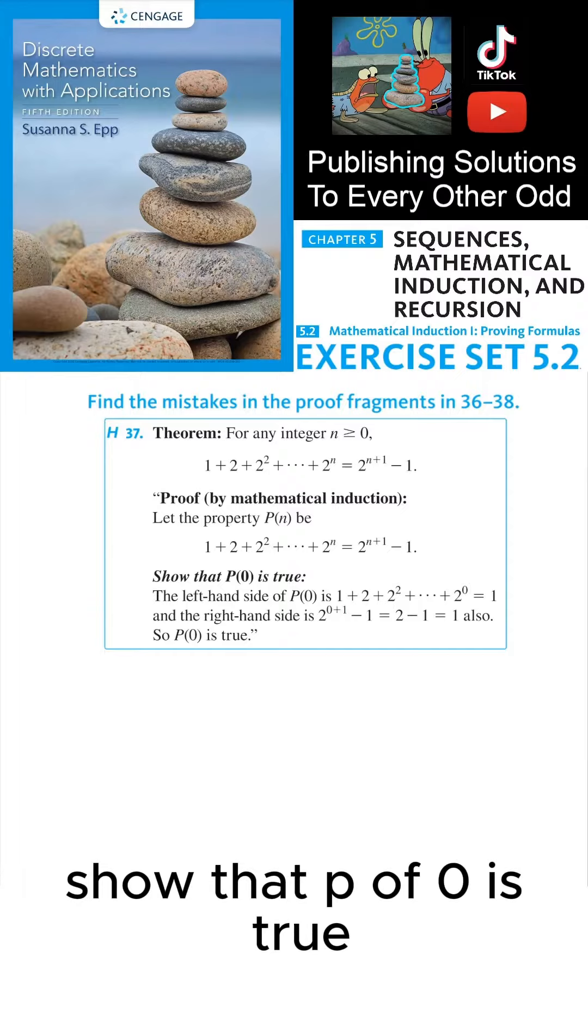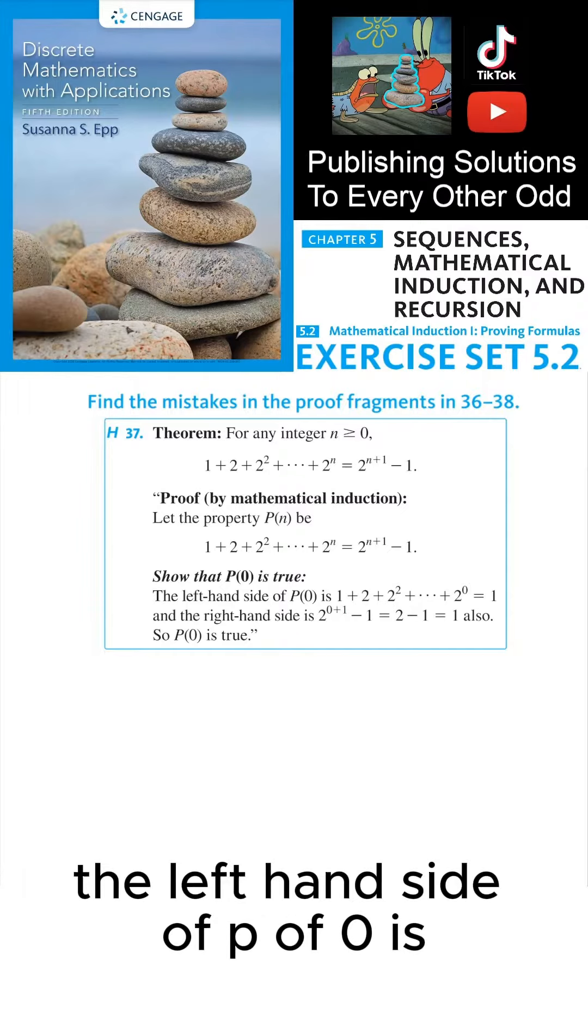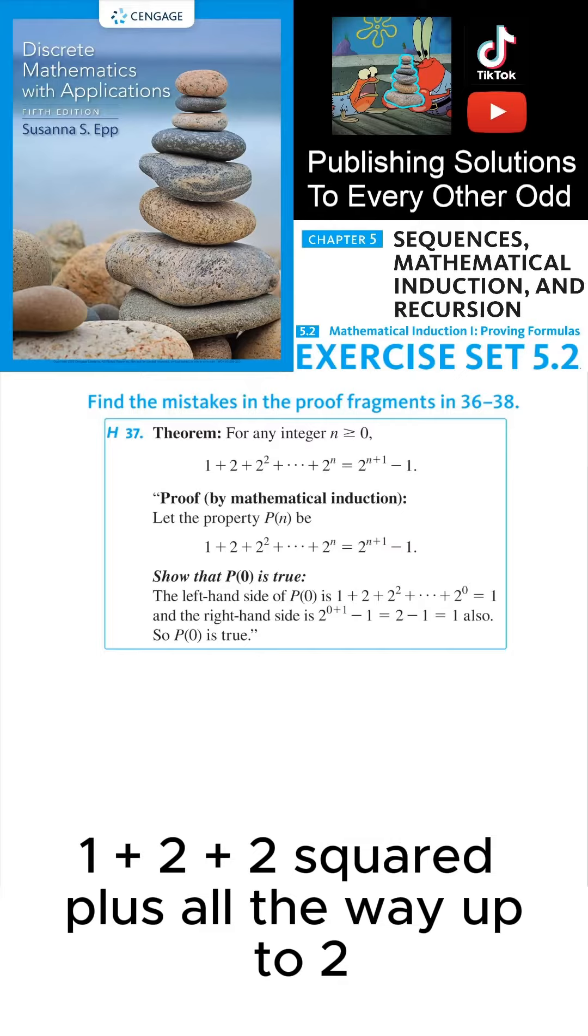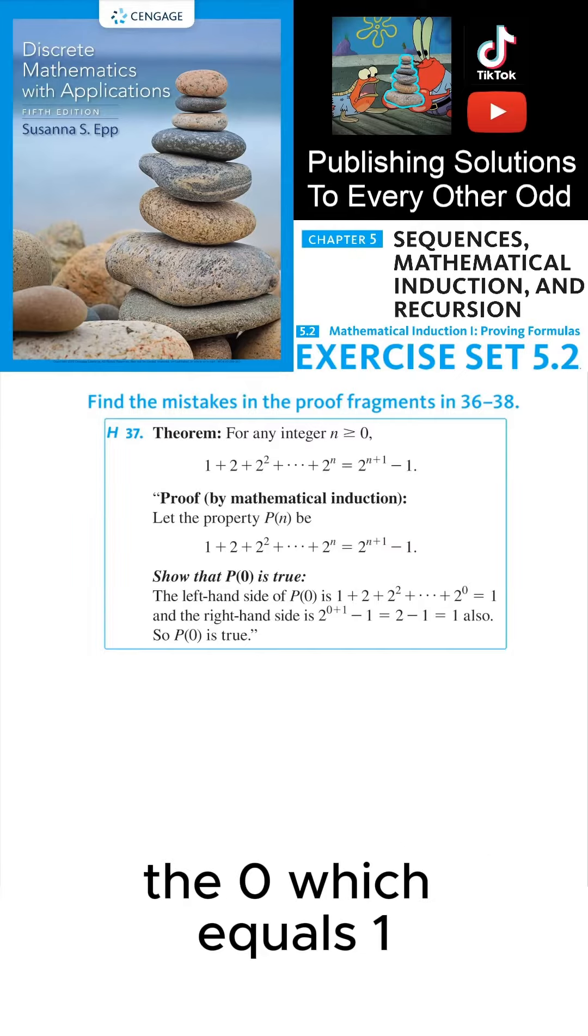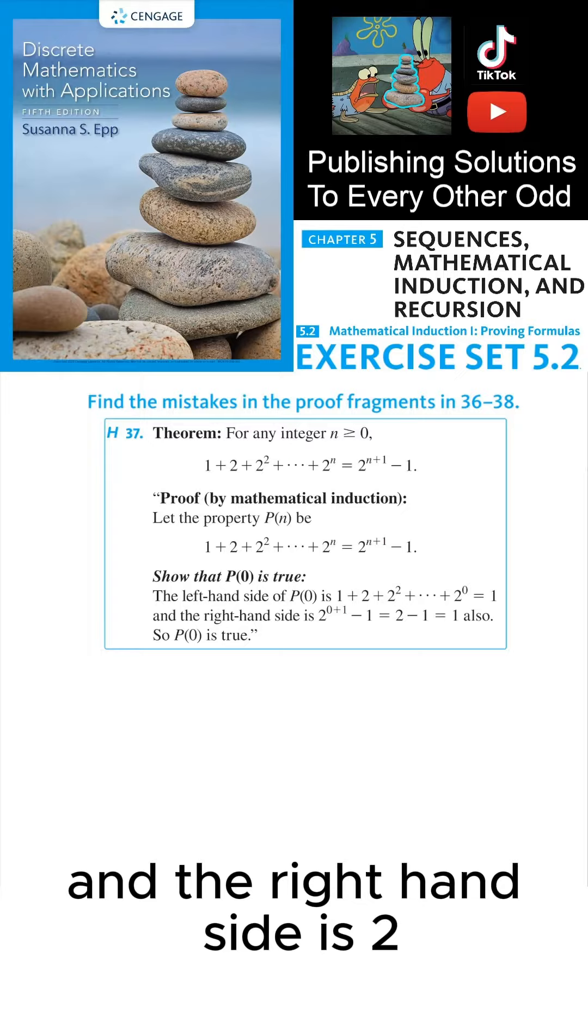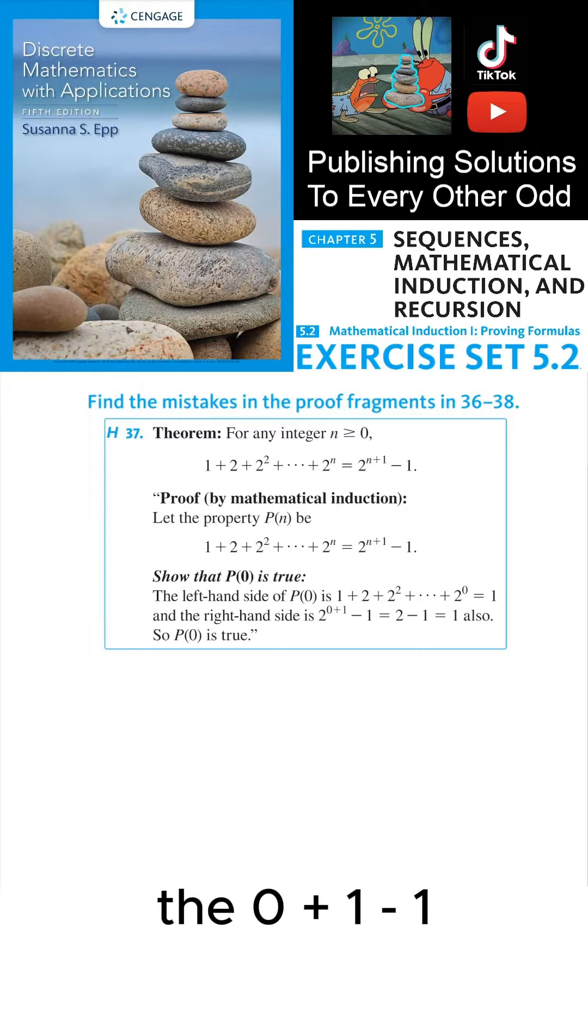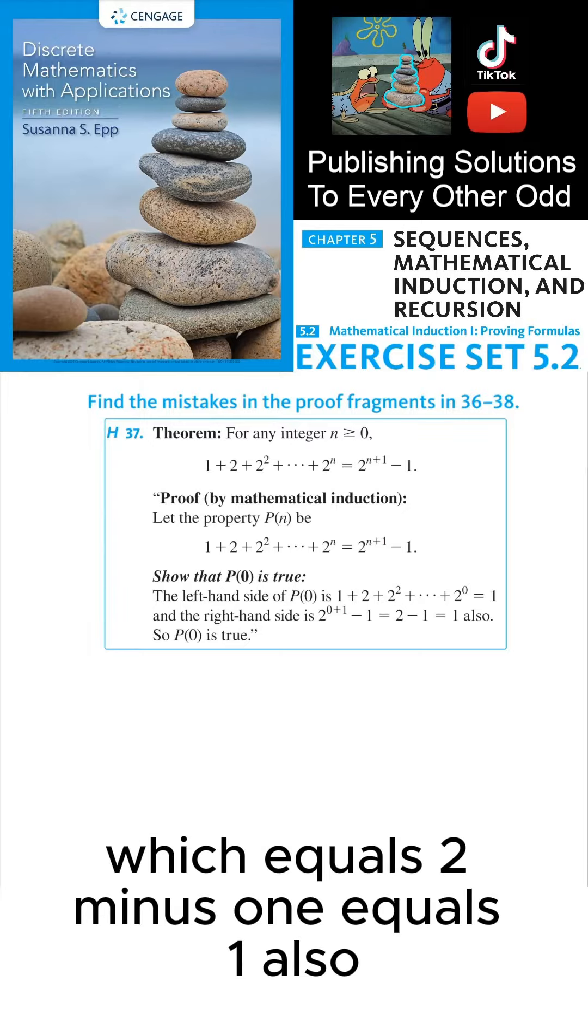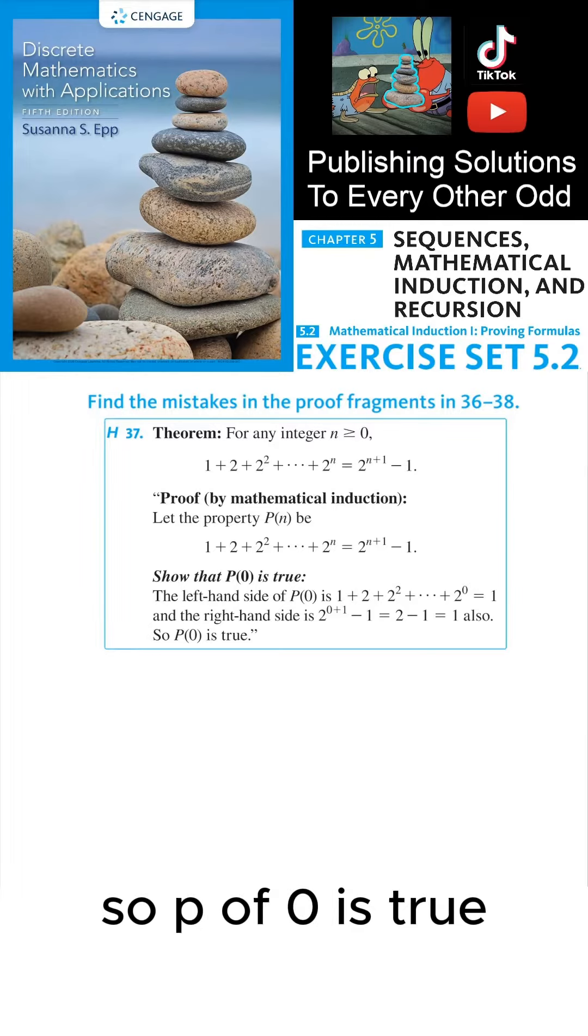Show that P of zero is true. The left-hand side of P(0) is one plus two plus two squared plus all the way up to two to the zero, which equals one. And the right-hand side is two to the zero plus one minus one, which equals two minus one, equals one also. So P of zero is true.